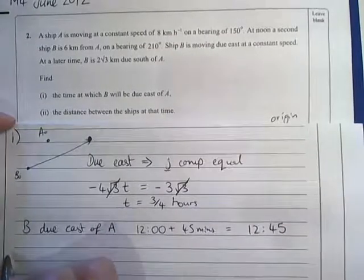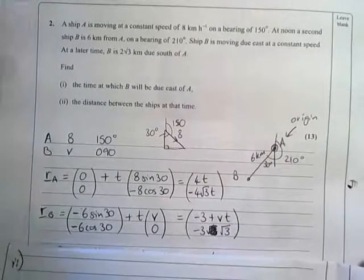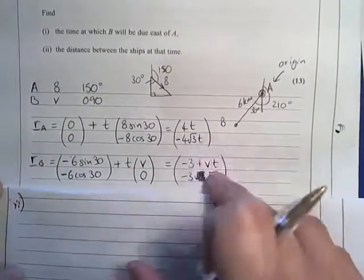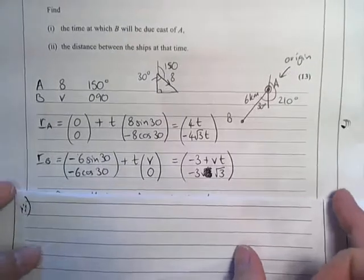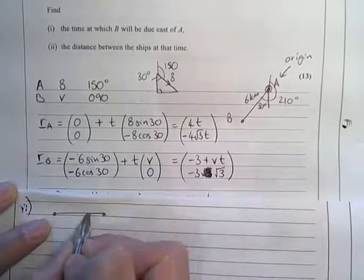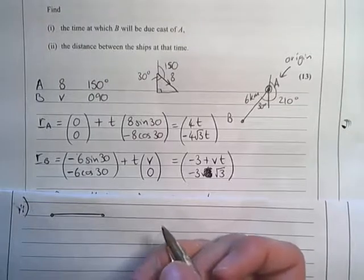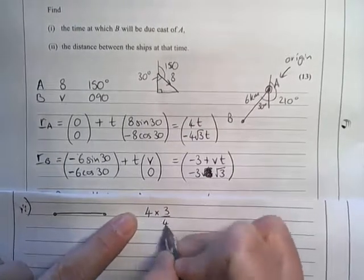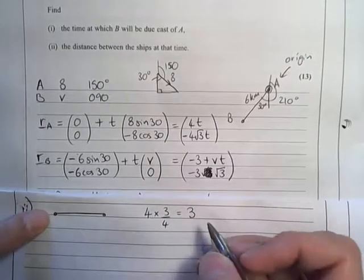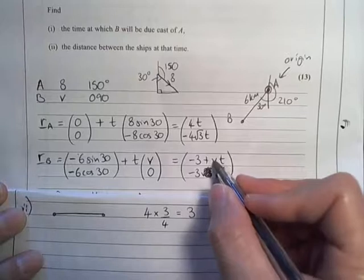Then part II asks for the distance between the ships at that time. The distance between the ships we can get by putting that value of T into here. Now, as we know that the J components are going to be equal, one's here and one's here, all I need to do is look at the I components. So if I pop in that T is 3 quarters in here, I get 4 times 3 quarters, which gives me 3. So the I component of A is 3.